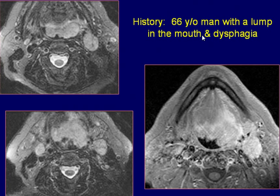A 62-year-old man with a lump in the mouth and dysphagia. Axial fat-saturated T2-weighted images demonstrate a large, irregular, hyper-intense lesion in the posterior portion of the tongue. The oropharynx is nearly obliterated by the mass lesion.